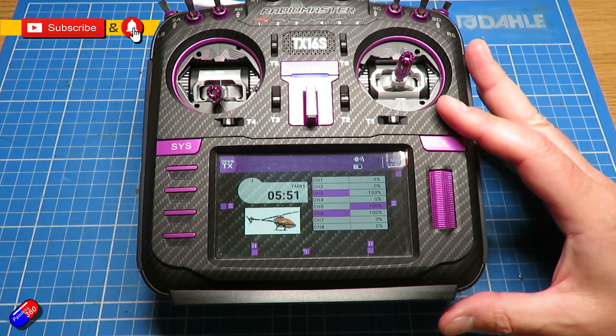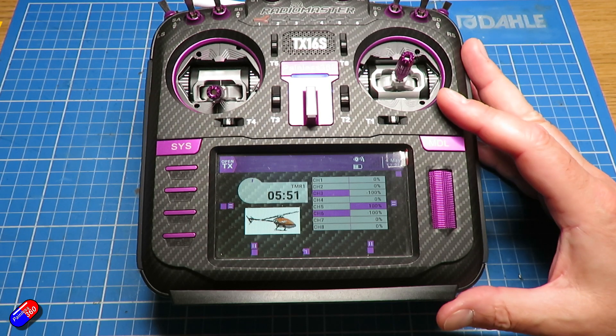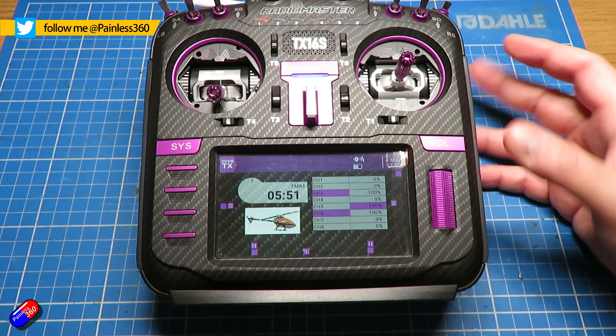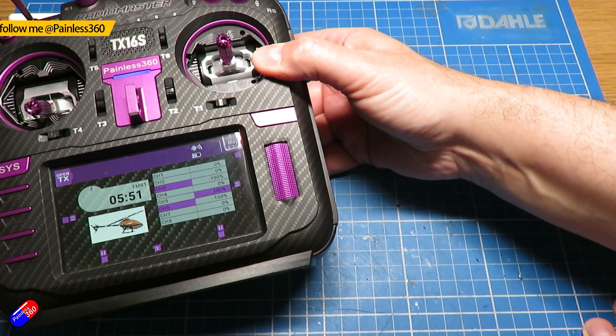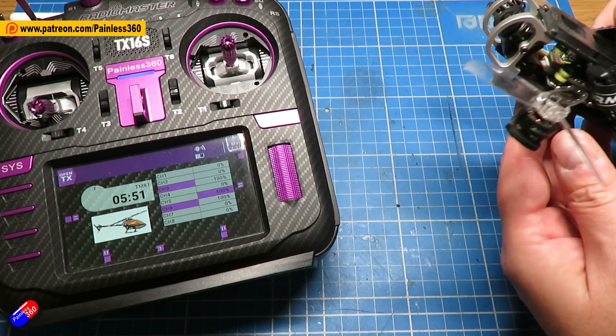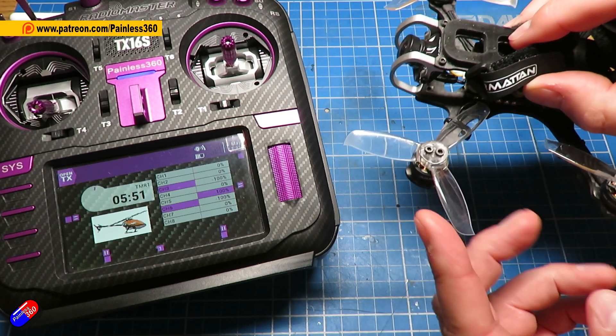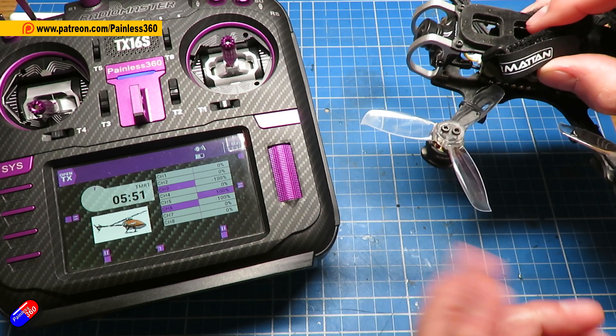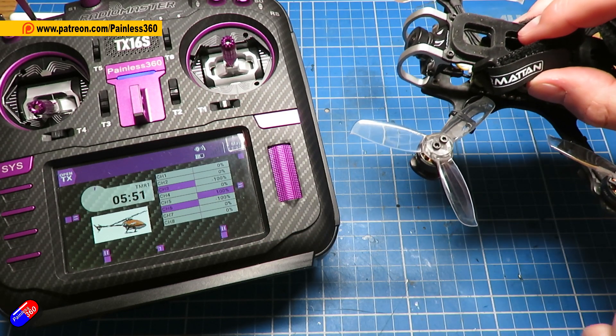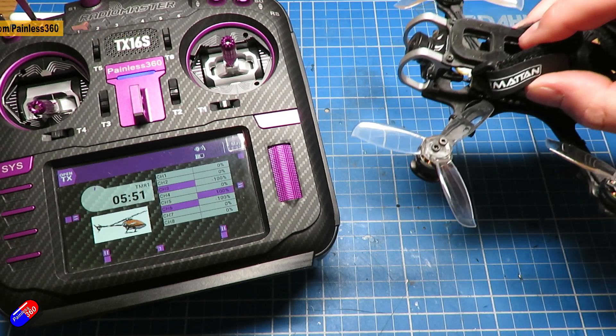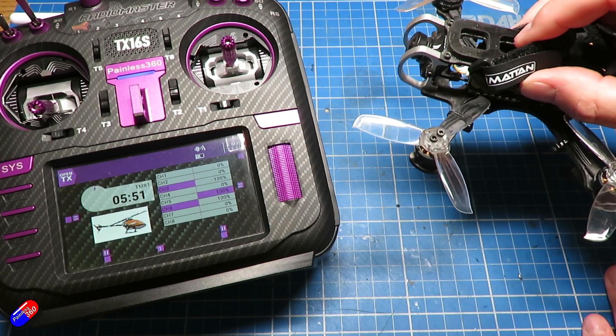This is something that can be a little bit confusing when you come into the world of collective pitch helicopters, because normally the way that we change how much thrust we get from a motor and a prop, like on this little Armentine quad, is we just spin the prop faster. So by increasing the throttle, we increase the lift or thrust that we get from the blades.